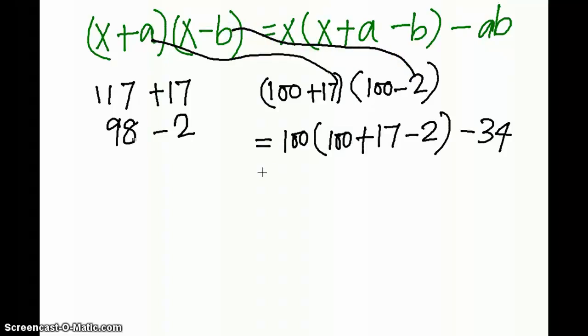After that, we get 100 whole into 100 plus 17 minus 2, which is 115, minus 34. This gives us 115 followed by double zero, minus 34.